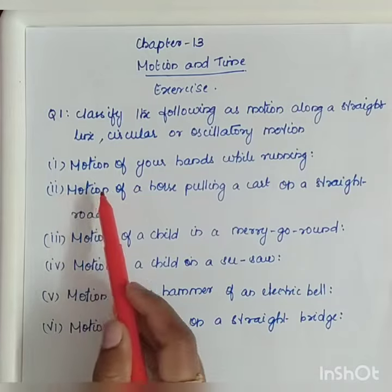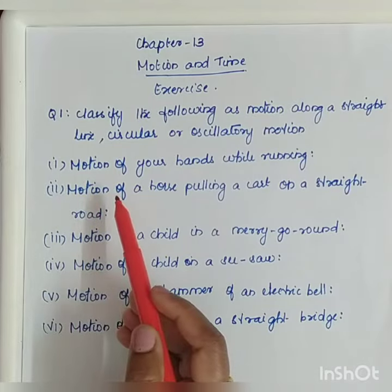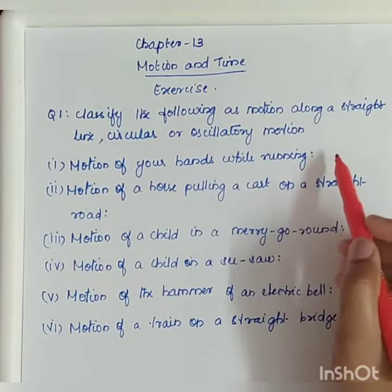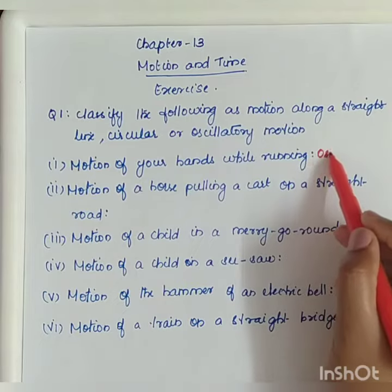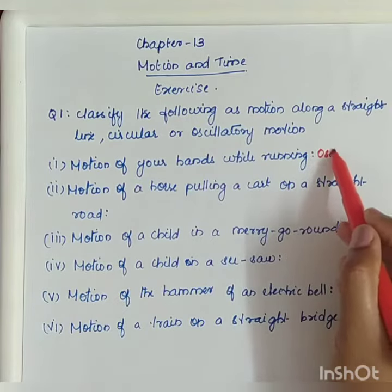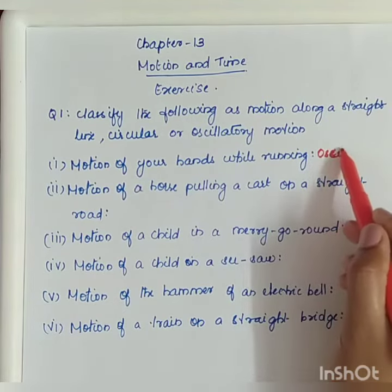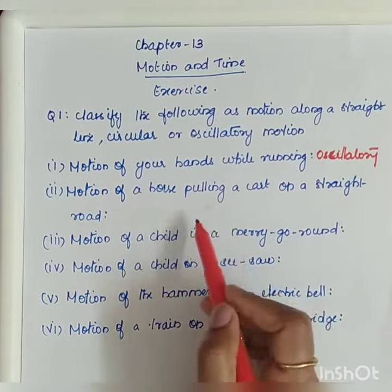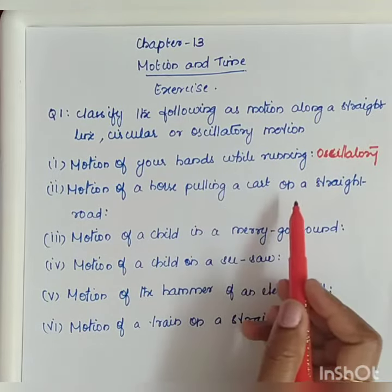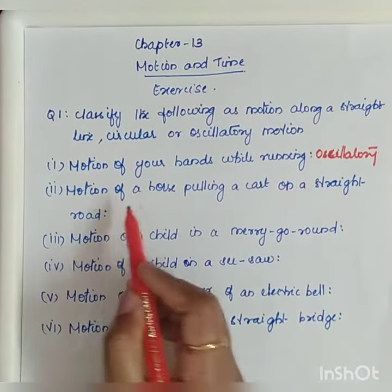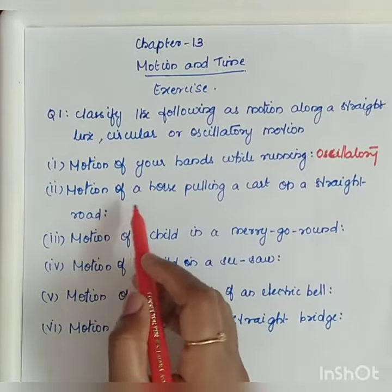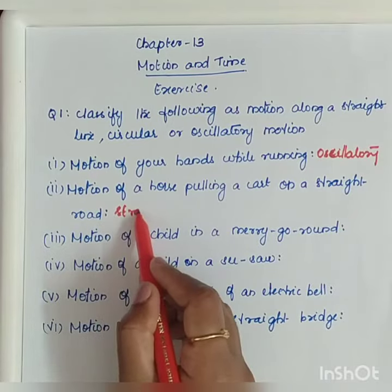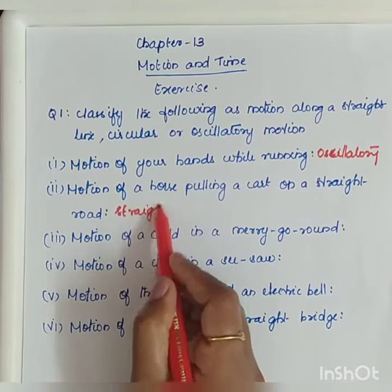First question is motion of your hands while running. Hands while running is periodic, so it will be oscillatory. Motion of the horse pulling a cart on a straight road — straight or linear, so it's a straight line.